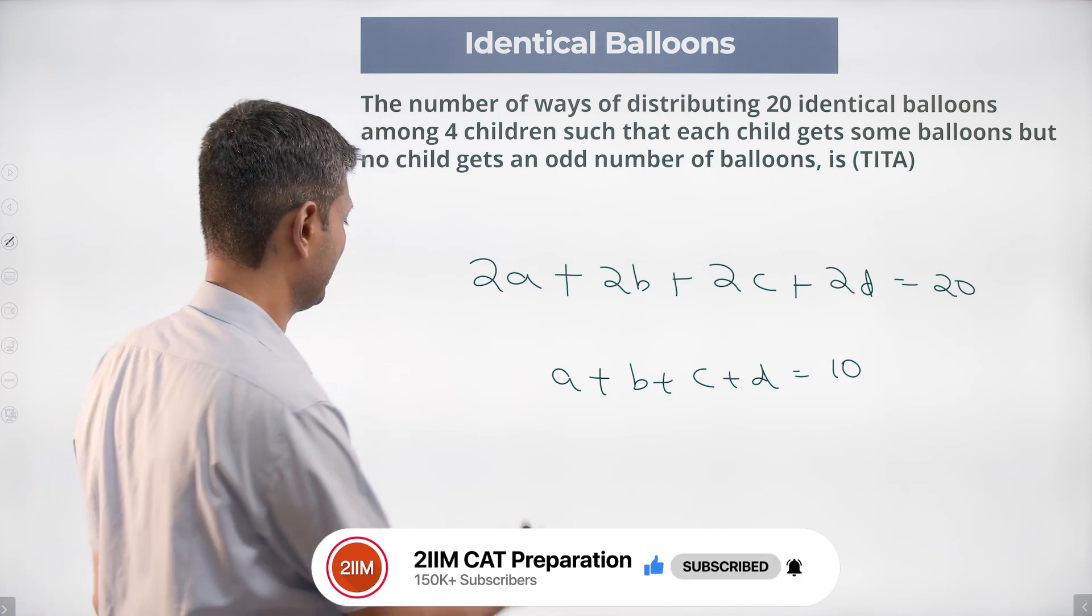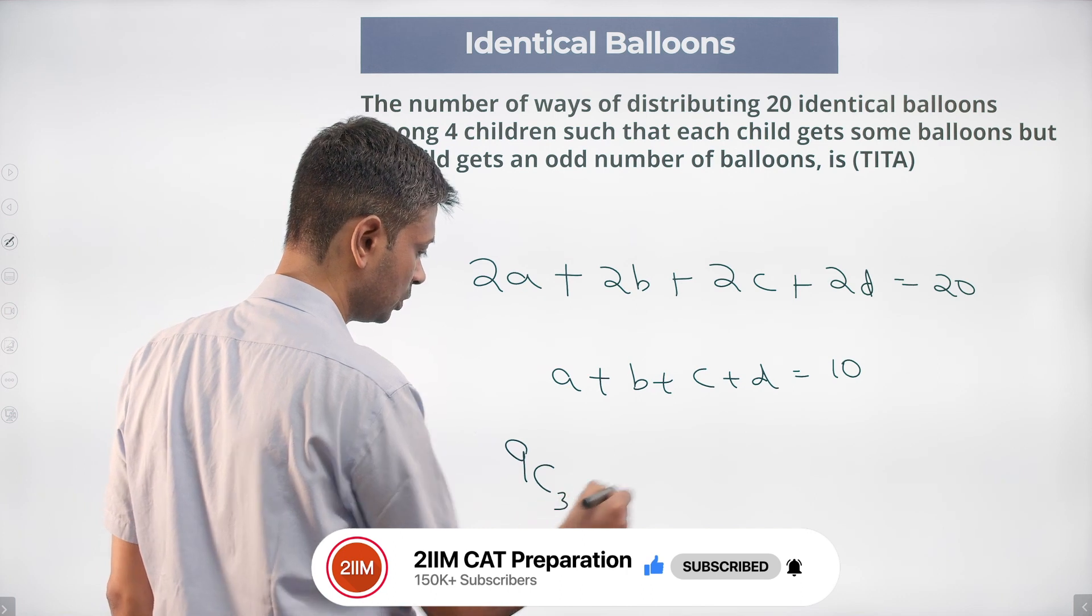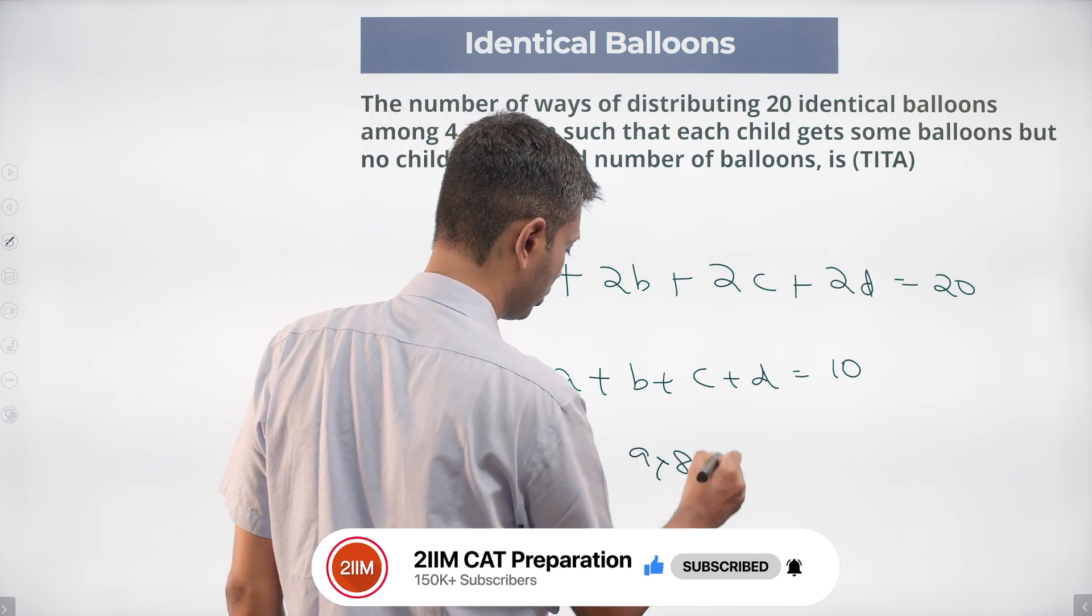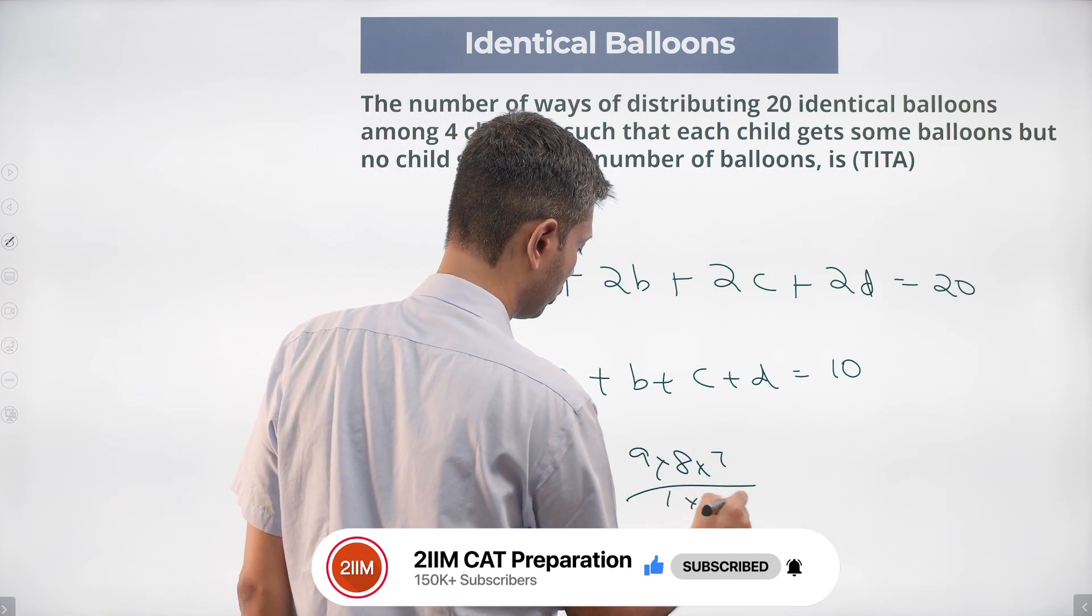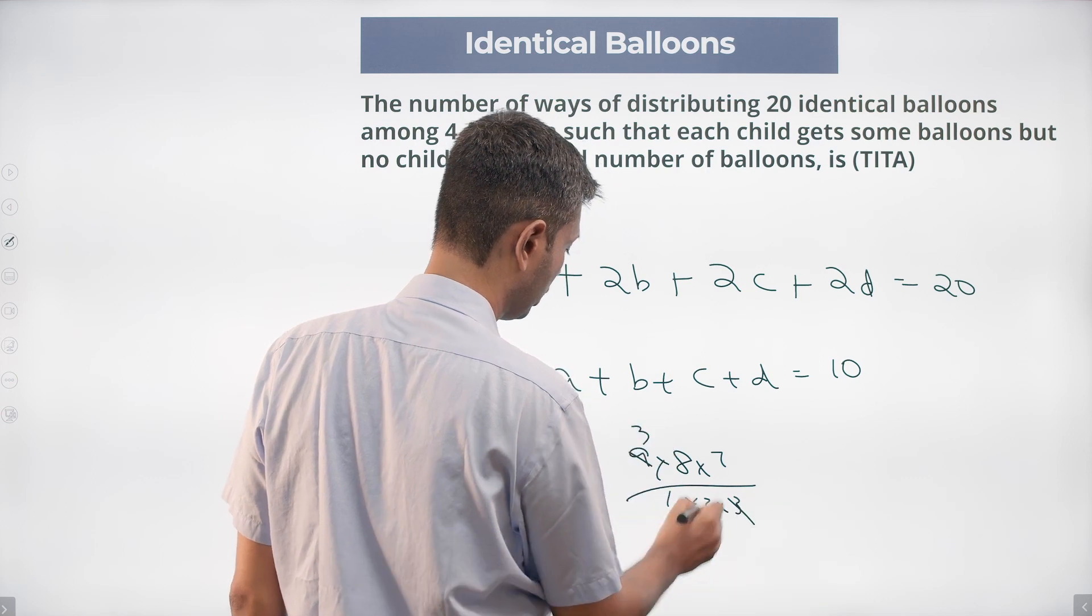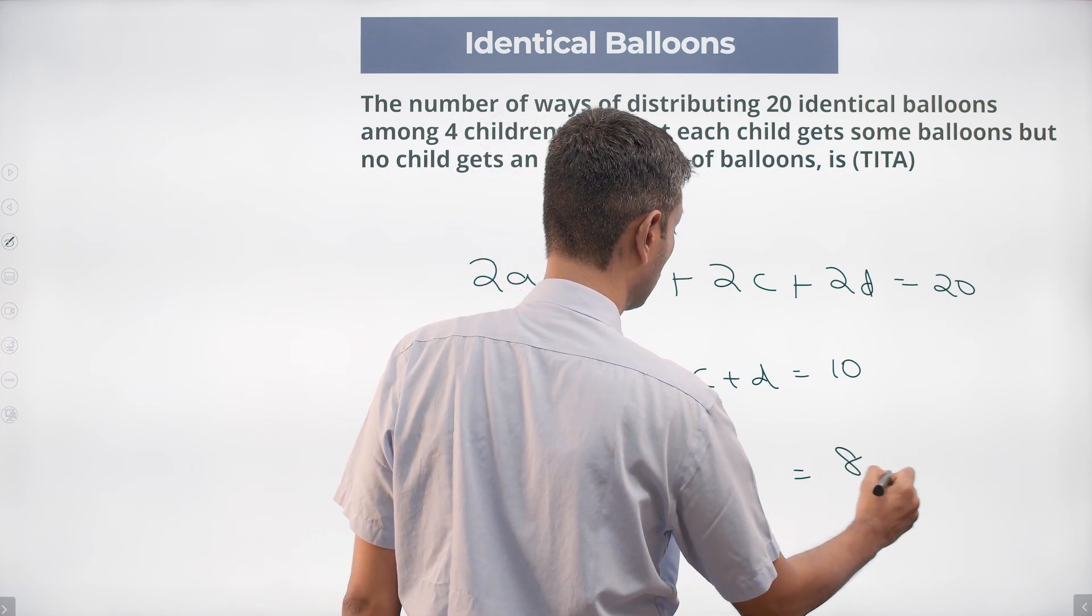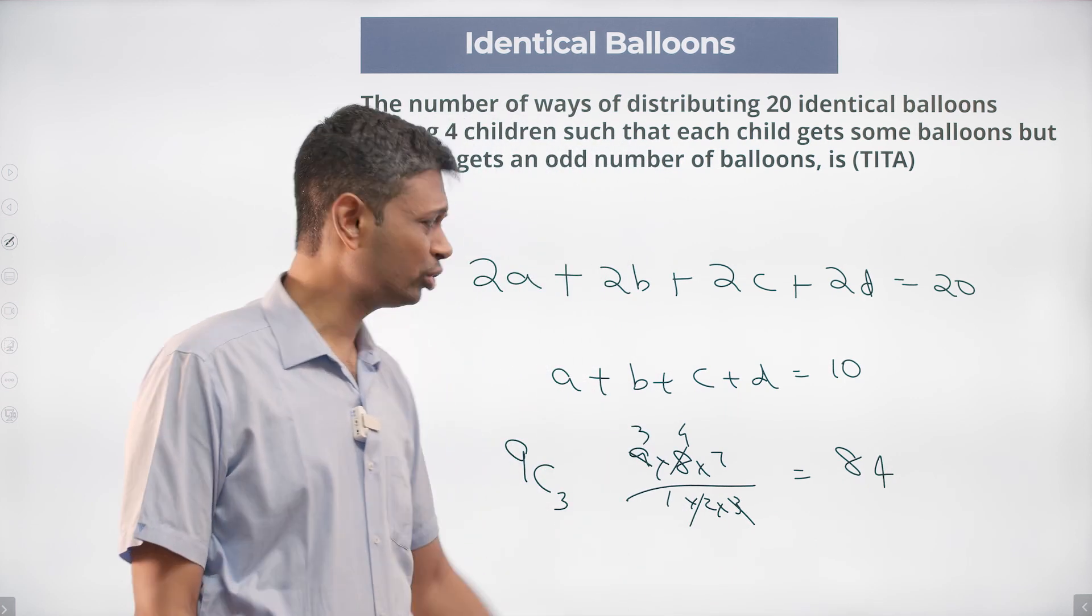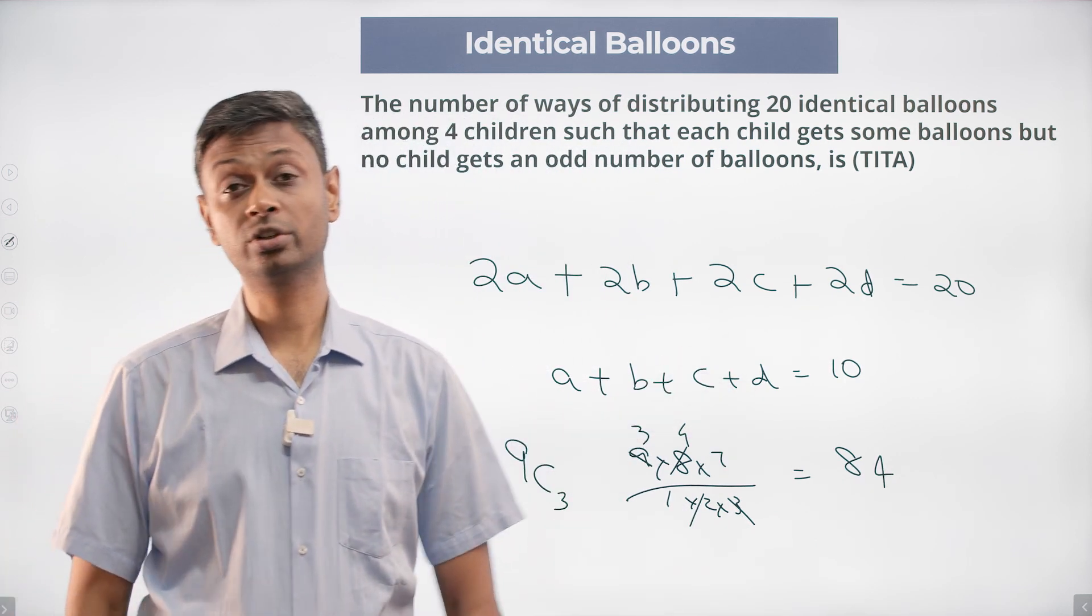Which is 9C3: 9 into 8 into 7 by 1 into 2 into 3. This is 3, 12 into 7, 84. This is 9C3, that you should know, should have gotten enough practice.